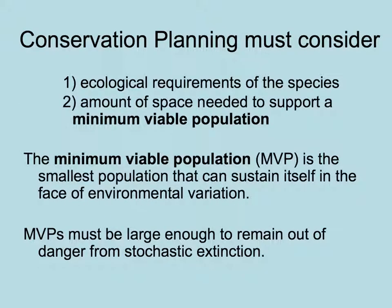Conservation planning has to take into account the ecological requirements of species, but also the amount of space and resources needed to support a minimum viable population, abbreviated MVP. This is the smallest population that can sustain itself in the face of environmental variation, and these MVPs have to be large enough to remain out of danger from stochastic extinction.